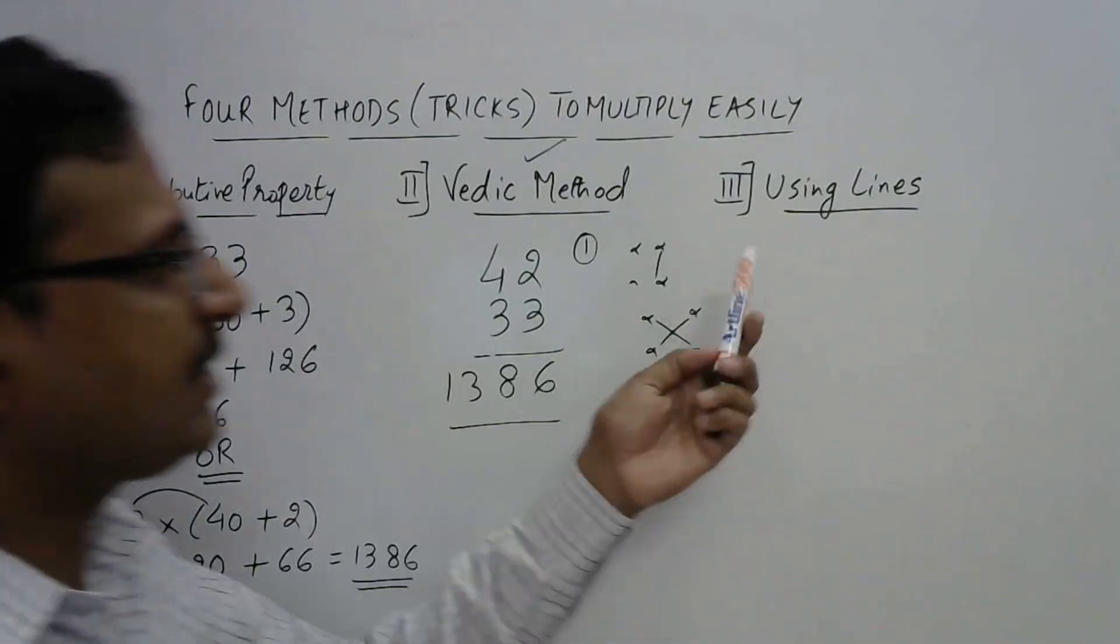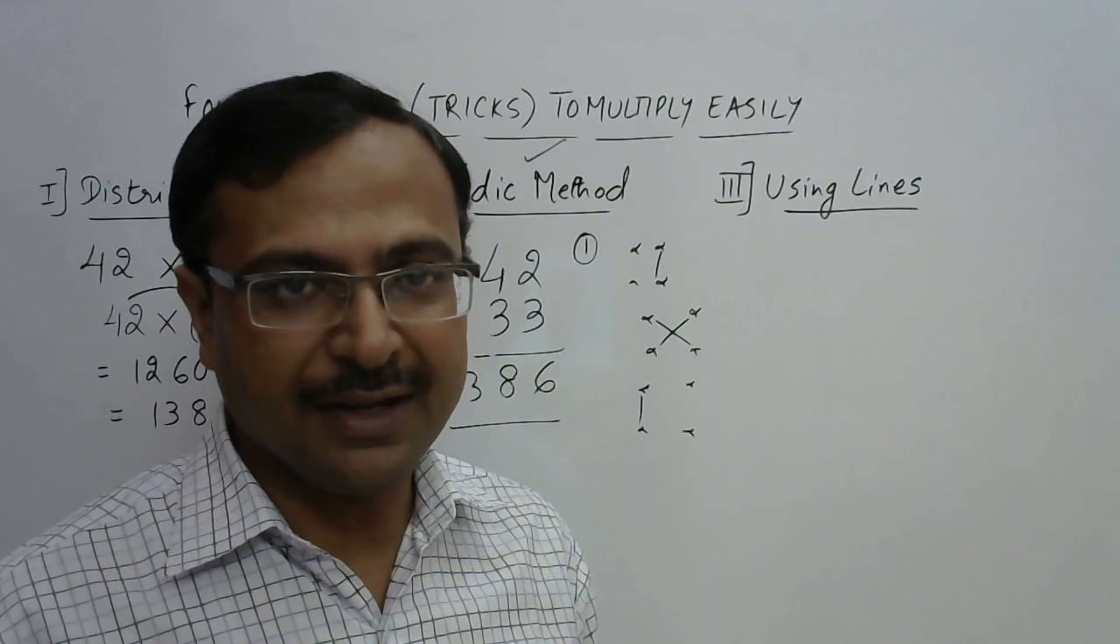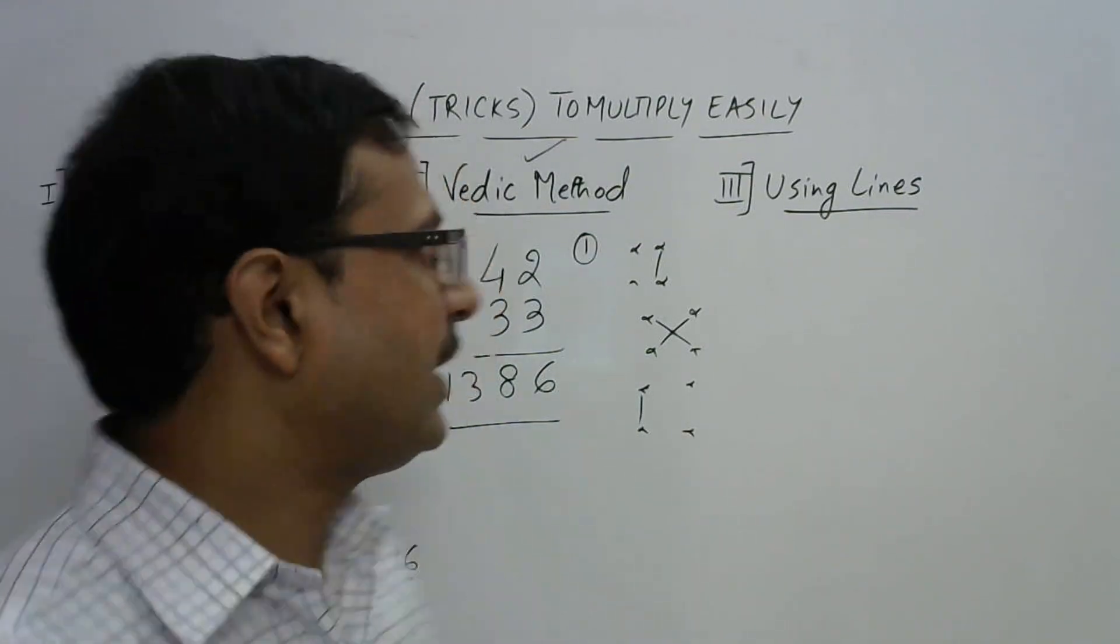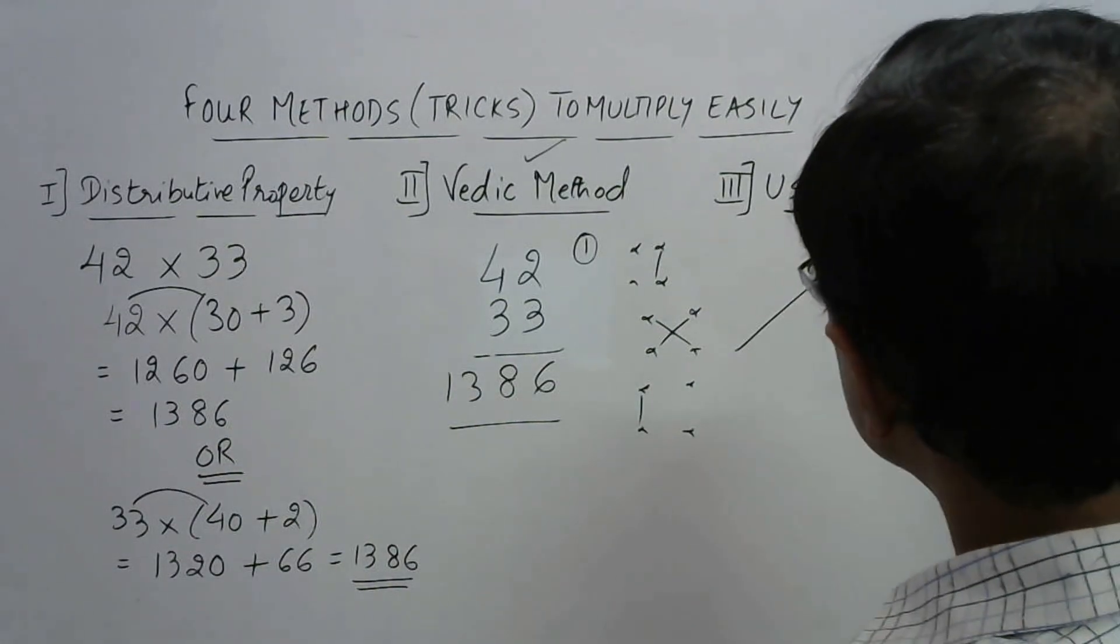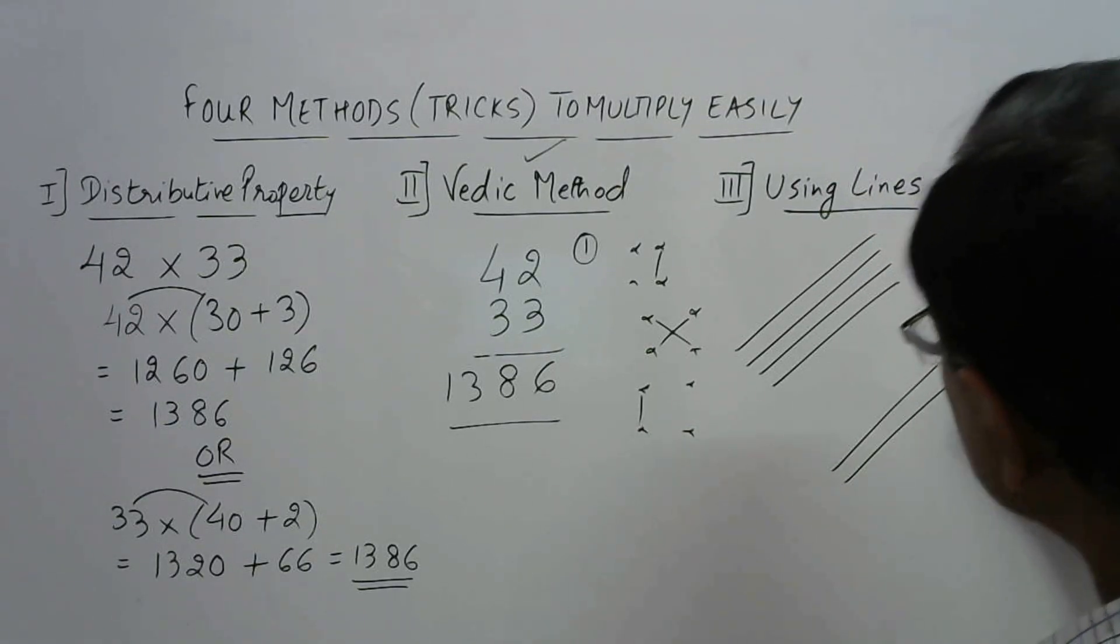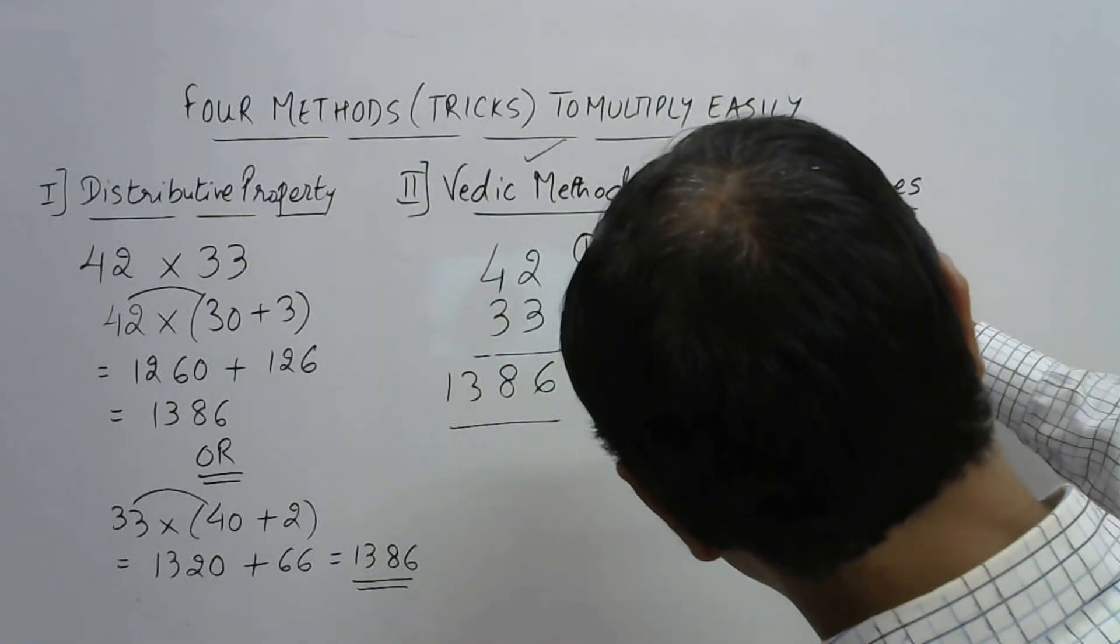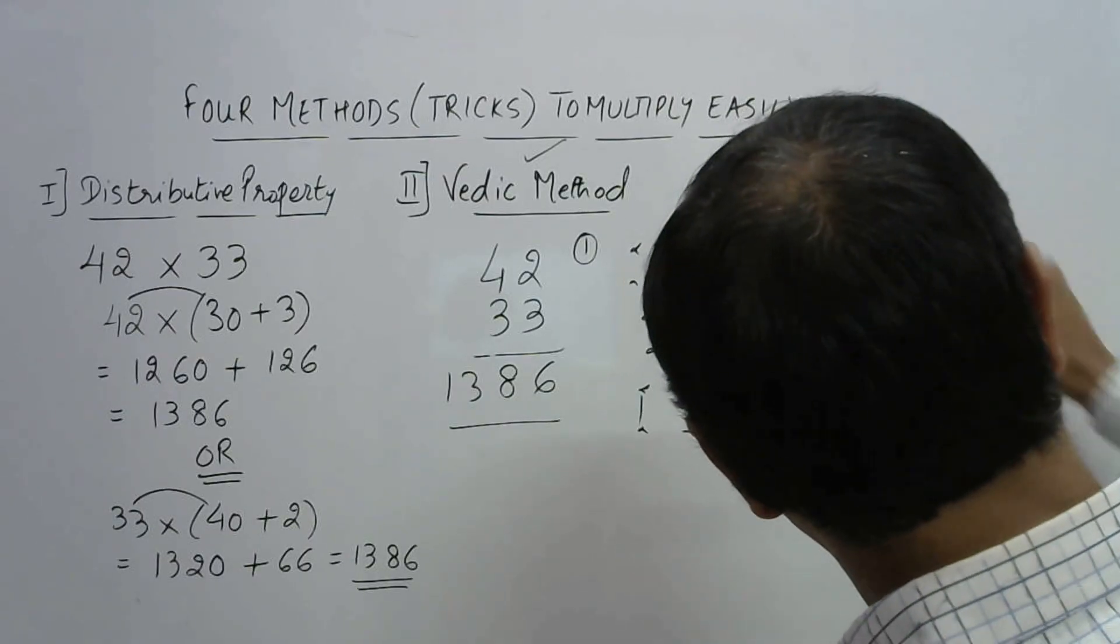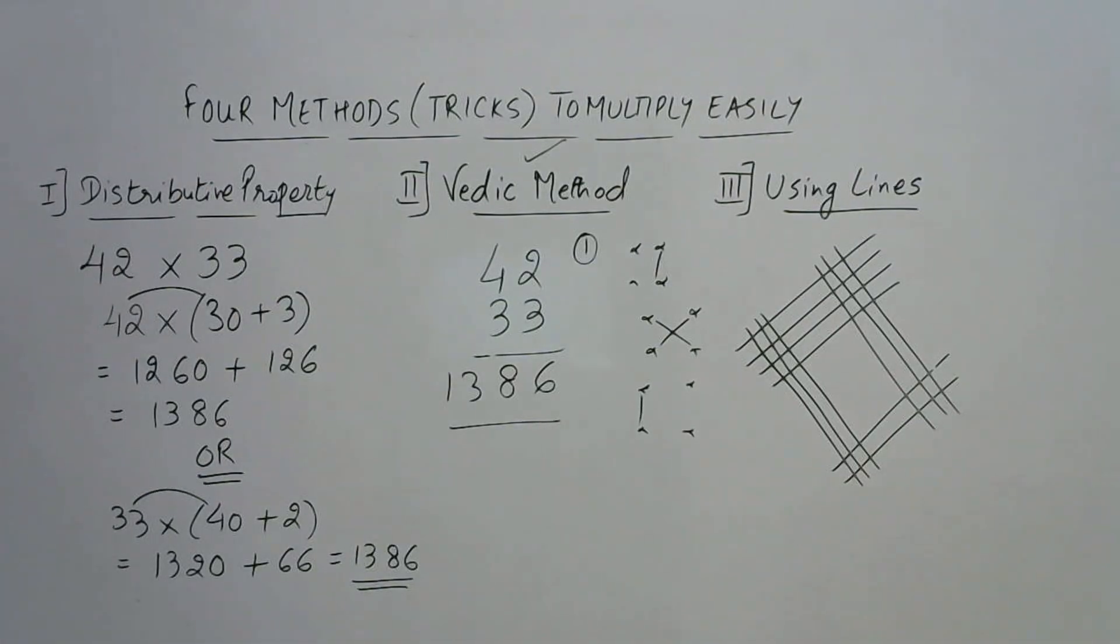And what about the Japanese method using lines you can do it. It is a fun method. Students will feel very good when you tell them these kind of methods in the classroom or at home. So let us see 42 and 33. So 42 means 4 lines and 2 lines 42. So this is 42 and now 33. 33 means 3 lines here and again here. So I have represented them by lines.